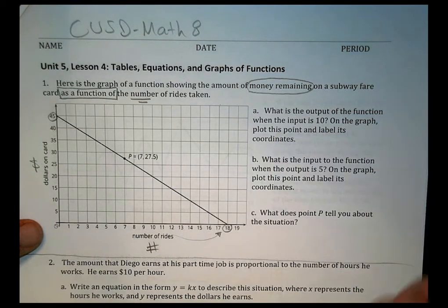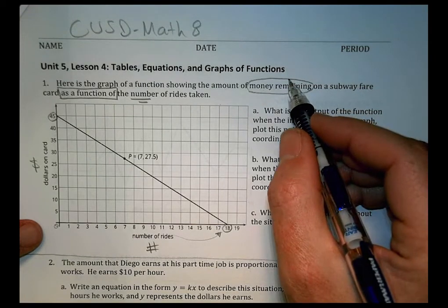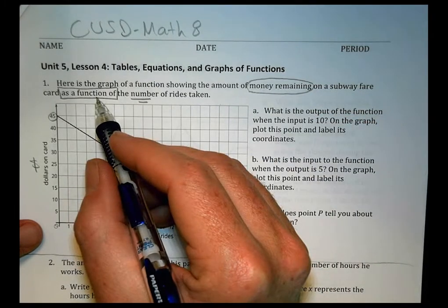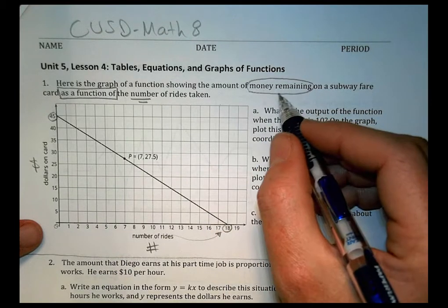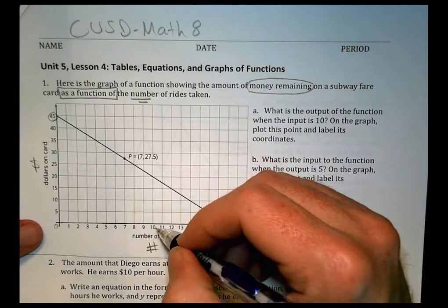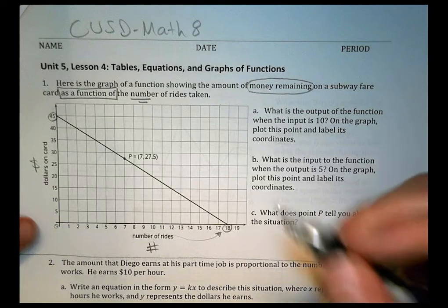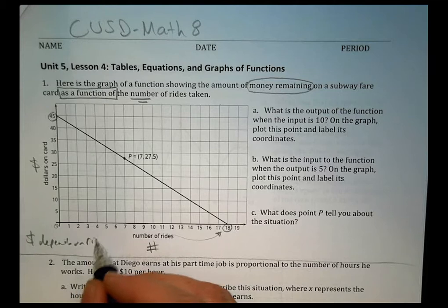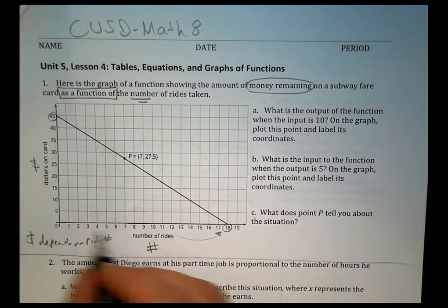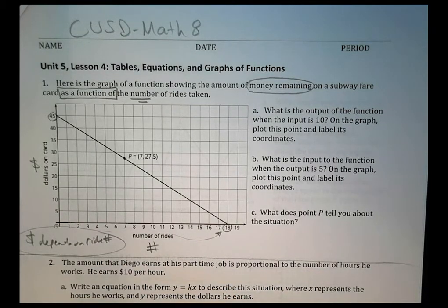So after it looks like 18 rides, how much money is left on that card? Well, we'd say there's nothing left. It started here. That's our dollar amount. And the dollar amount is going to decrease the more times you use the card. Makes sense. The more times you use the card, the less money you have.